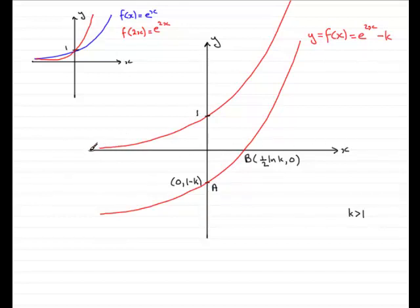And if we move that down k units, we're going to find that that graph is going to move down k units. And so the x axis is going to move down as well, or the equation of that line is going to move down k units.